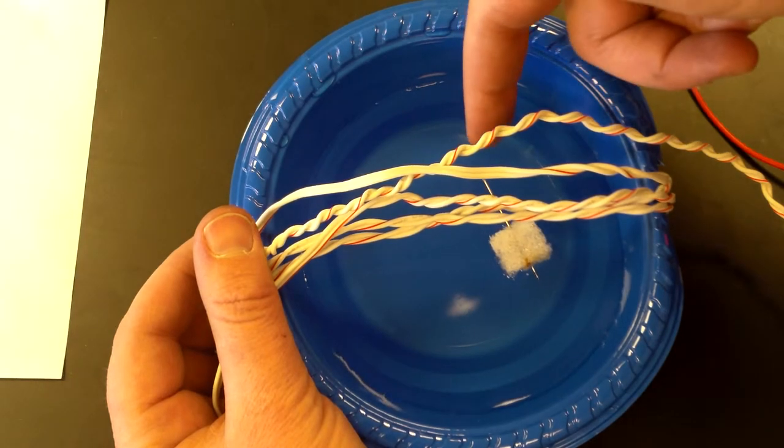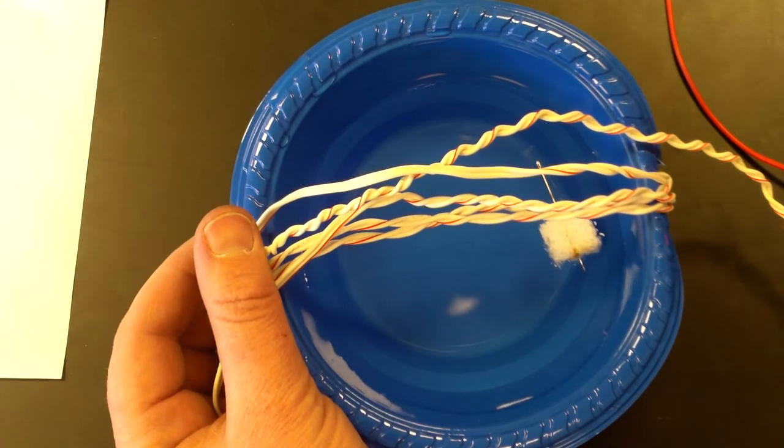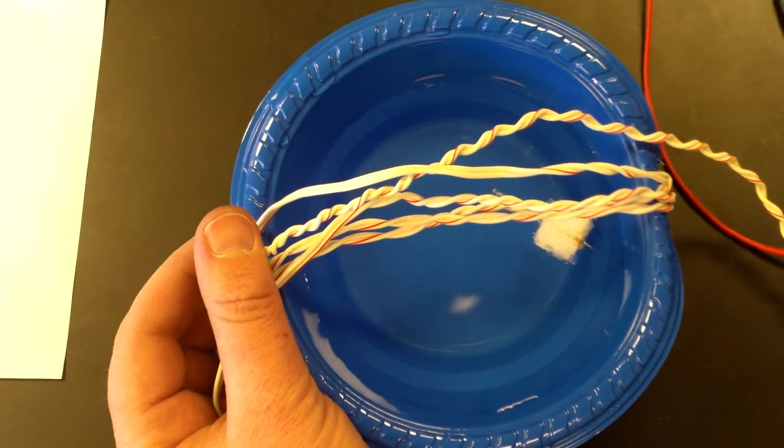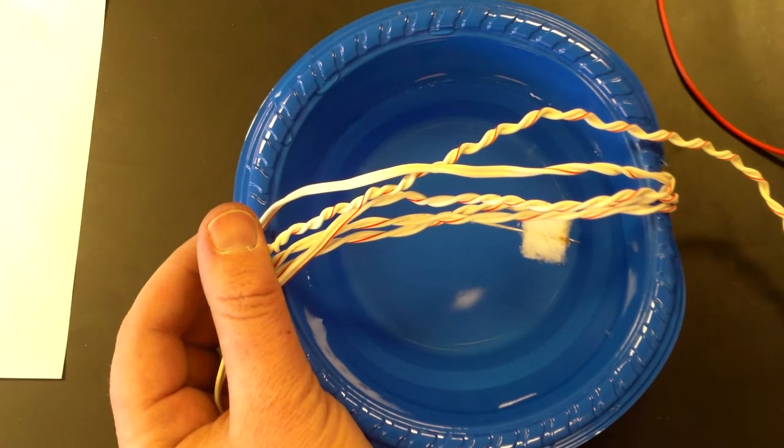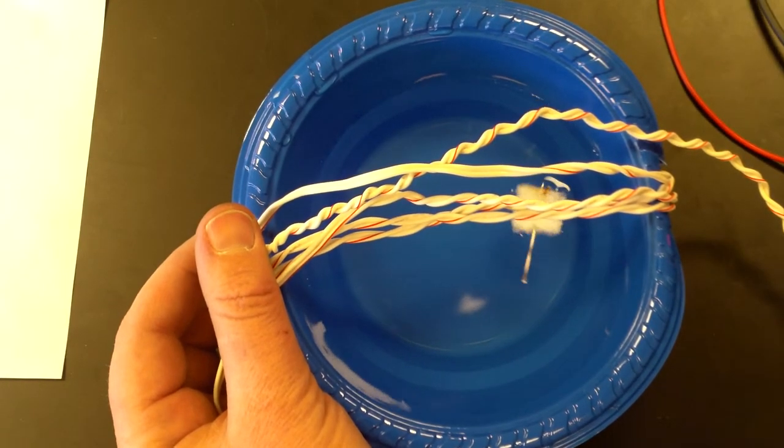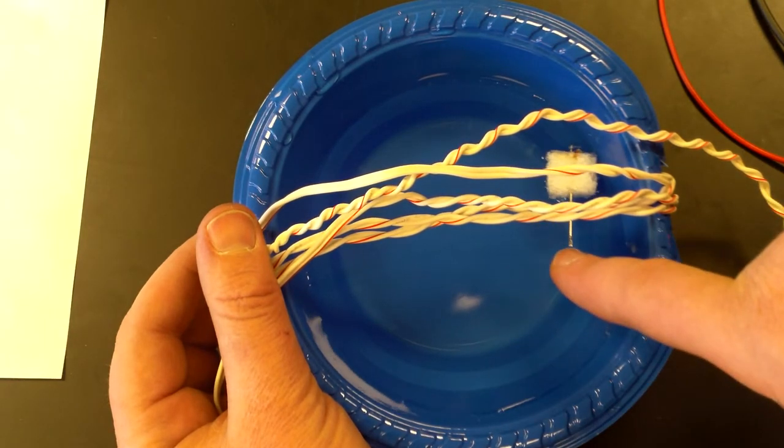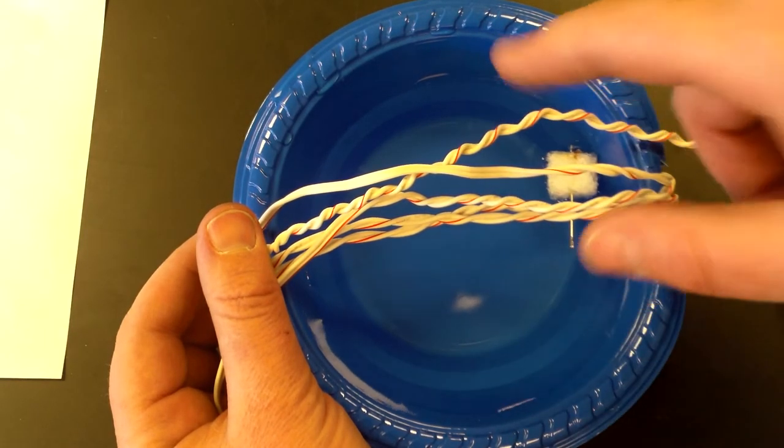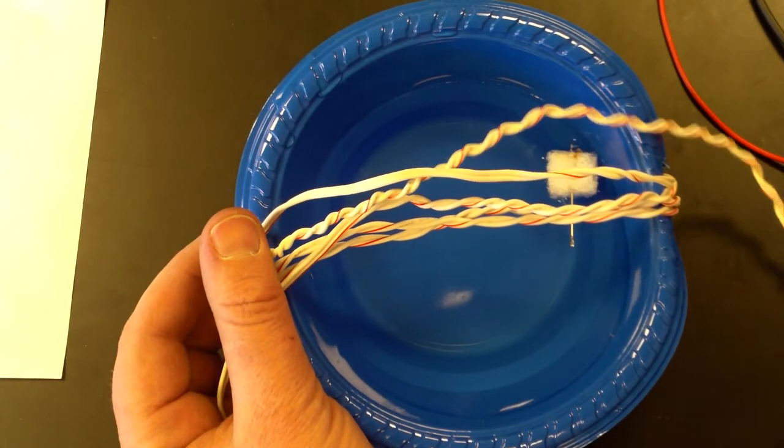Now the end with the head where you put the thread through is over here. The last thing I'm supposed to do is swap, so I'm going to swap my plus and minus. You'll notice that the needle flips the other way. The side where you put the thread through is now here when it used to be over here. That's because I swapped the wires.